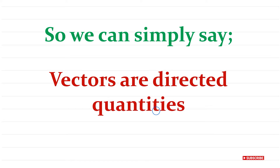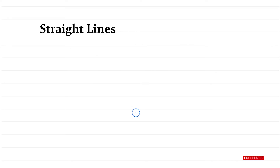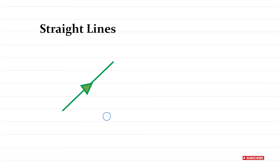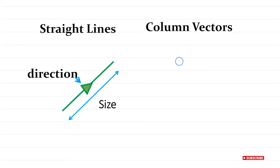So how do we represent vectors? Well, we can have them as straight lines, but we must put an arrow on them — because they have direction, we need to show that direction. The arrow also shows the magnitude of that vector. We can also write them as column vectors, which you will see sometimes.